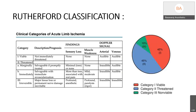Coming to the clinical classification of acute limb ischemia — the Rutherford classification. Class 1 is viable, where the limb is not immediately threatened. Class 2A is a marginally threatened limb, salvageable if promptly treated. Class 2B is an immediately threatened limb, salvageable with immediate revascularization, with sensory loss beyond the toes and associated rest pain. Class 3 is irreversible ischemia with major tissue loss or permanent nerve damage — the limb is profoundly anesthetic.